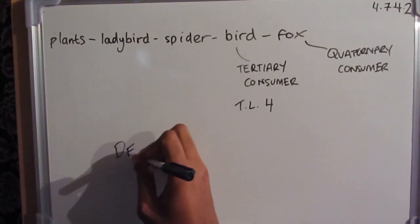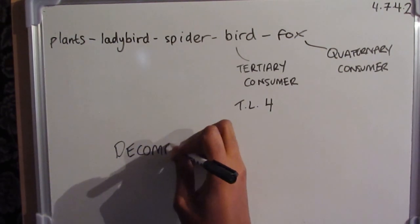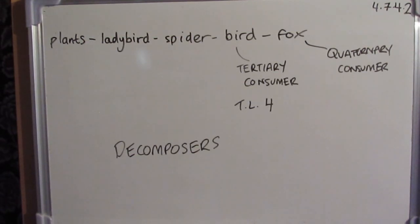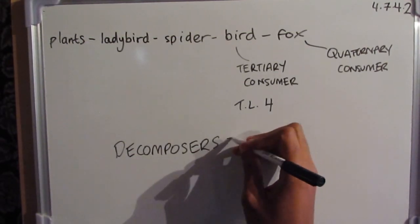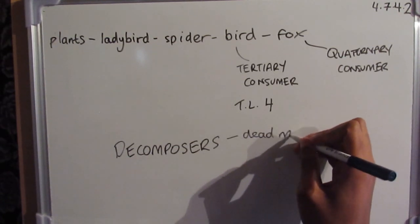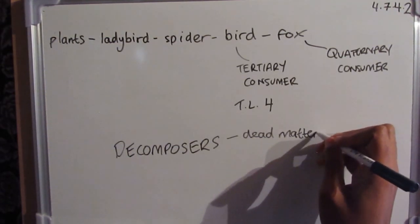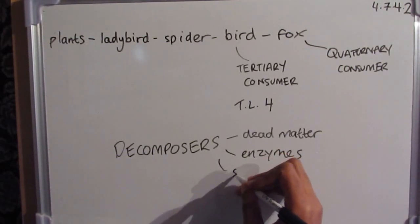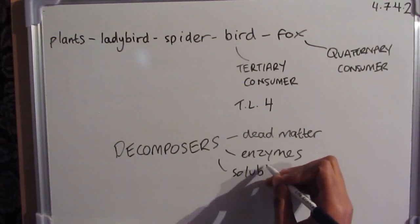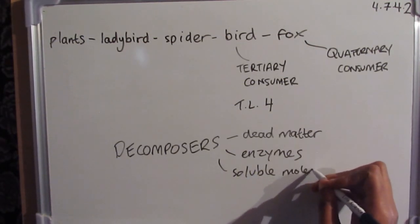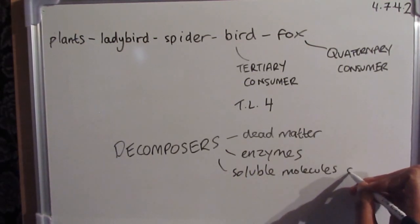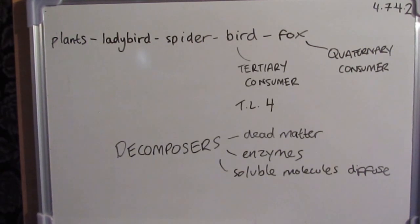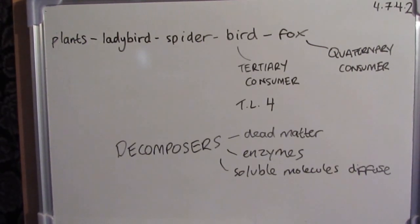There is one other type of organism that carries out feeding: decomposers. You looked at these earlier in the ecology topic in the section on decay and the required practical on fresh milk. Decomposers break down dead matter using enzymes to digest it. Any soluble small molecules produced can then diffuse into the microorganism to help it grow and carry out the decay process.